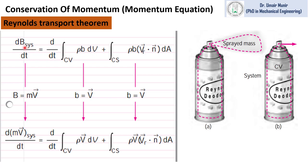Here in this equation, capital B represents any extensive property of the system and small b is the property of a system per unit mass. So to derive the momentum equation, we will replace capital B with the momentum mv, and small b we will replace with velocity v. So we will get the momentum equation in this form.